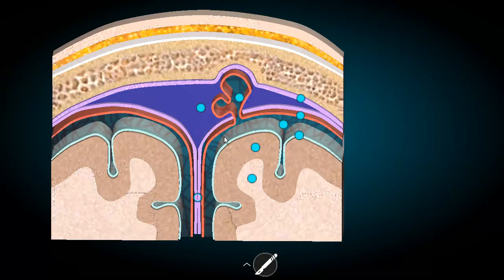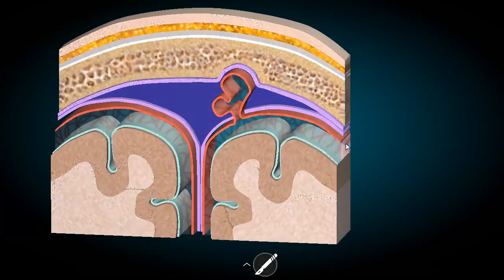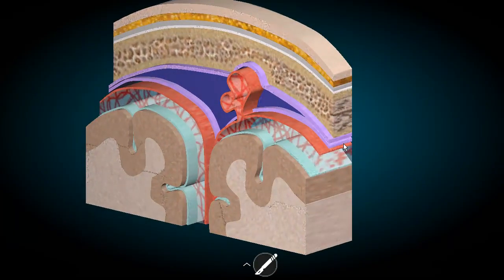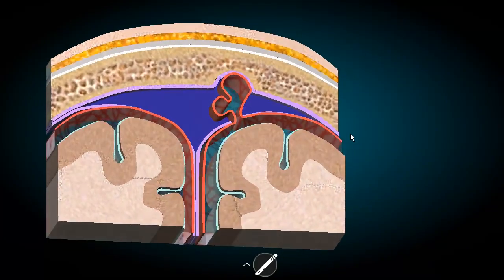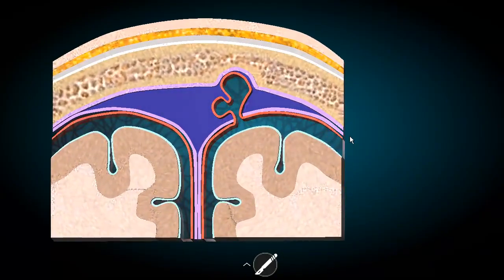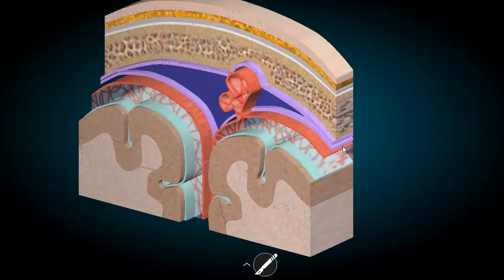The subarachnoid space is more related with the flow of CSF, which we will look at tomorrow. One important clinical to note: just like epidural and subdural hematoma, you can also have bleeding into the subarachnoid space. That is usually due to rupture of a berry aneurysm, which is the enlargement of a vessel in the circle of Willis.